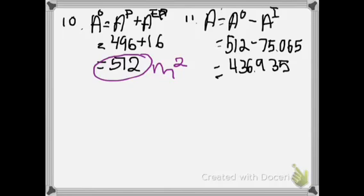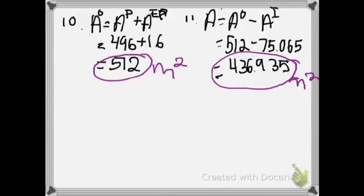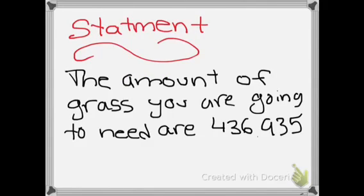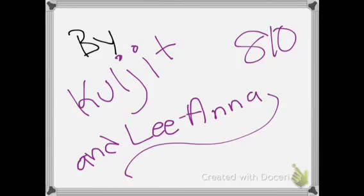Now we're going to subtract the area of the outside by the area of the inside. The area of the outside was 512 meters squared, and the area of the inside was 75.065 meters squared, which gives us 436.935 meters squared. Our statement: the amount of grass you're going to need is 436.935 meters squared. By Kaldi and Leanna in A10 — and sorry for all the mix-ups. Thanks for listening and watching our presentation!